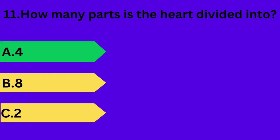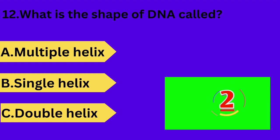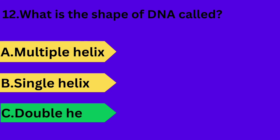And next question is: what is the shape of DNA called? Option A: multiple helix. Option B: single helix. Option C: double helix. Your time starts now. Answer is option C: double helix.